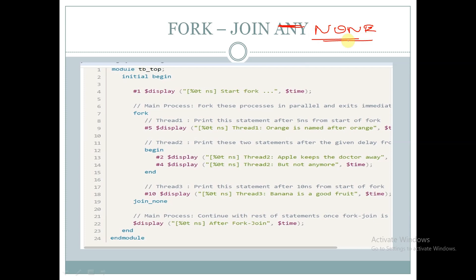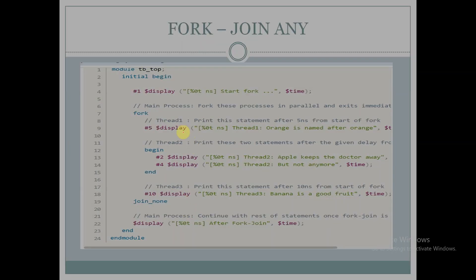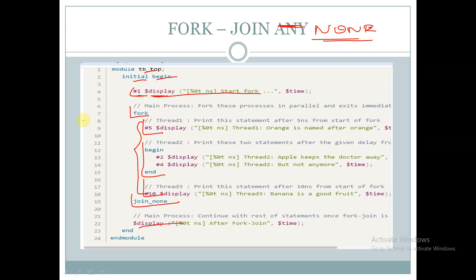Let's see an example of fork-join-none. We have a module called tb_top, and within an initial begin block we are displaying this statement at one time unit. Within fork-join-none we declare three threads: thread one has one display statement, thread two has two display statements, and thread three has one display statement. Outside the fork-join-none we have one display statement. Let's see the output. At one nanosecond we get the initial display and we enter the fork-join-none block.